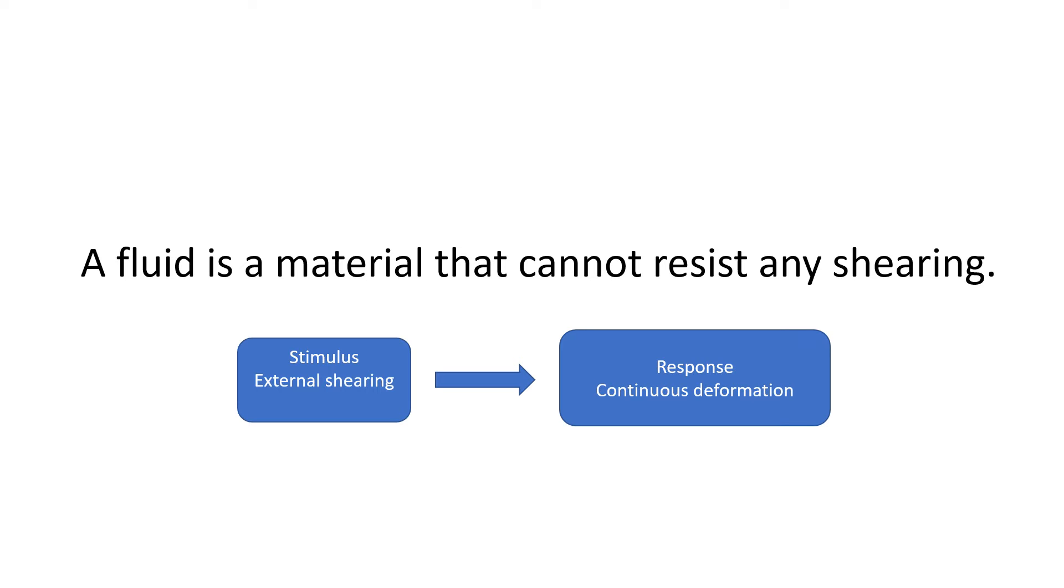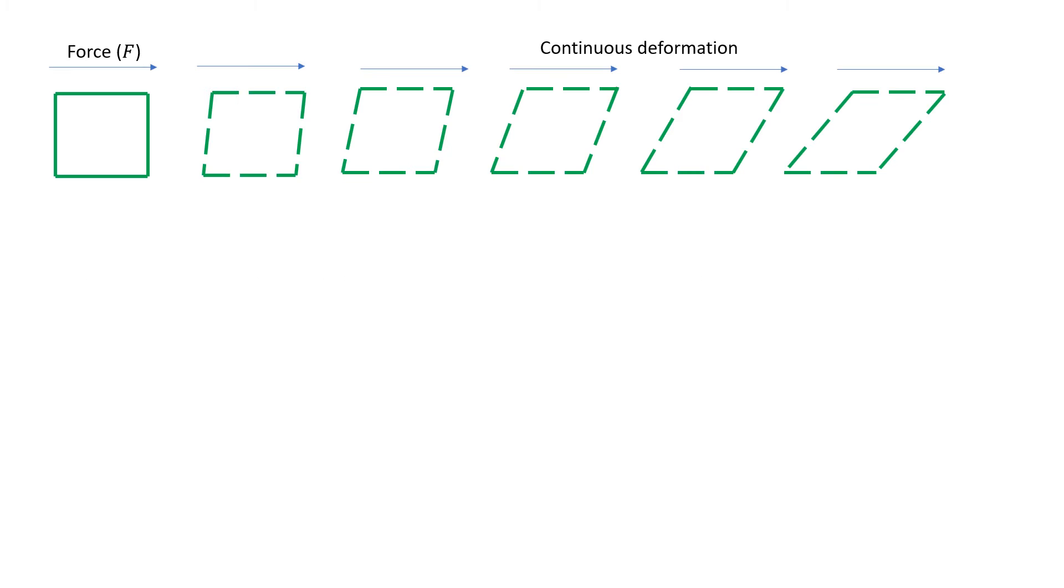Based on this deformation, the next step will establish a model to describe the stimulus-response relationship. Here we will mathematically describe the stimulus, which is force, and the response of the material, which is continuous deformation. One thing must be ensured: that the mathematical description should be able to generalize to all fluids regardless of size. For the stimulus, we will introduce shear stress: tau equals F, the force divided by the acting area A. In this way we can eliminate the size effect.